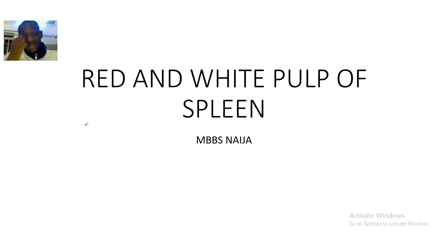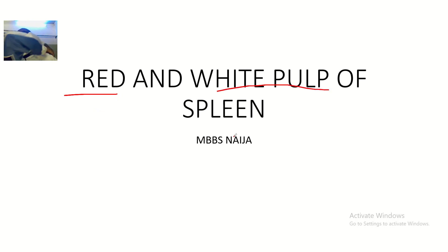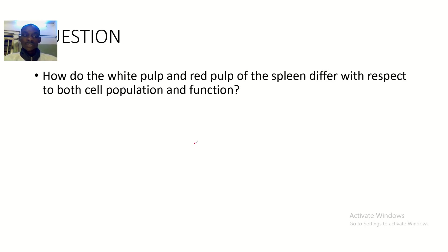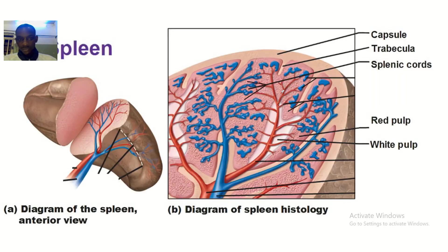Hey guys, just a short lecture and we'll be talking about the red and the white pulp of the spleen. The spleen contains two types of pulp — one is red and one is white. The question is: how do the white pulp and the red pulp of the spleen differ with respect to both cell population and function?